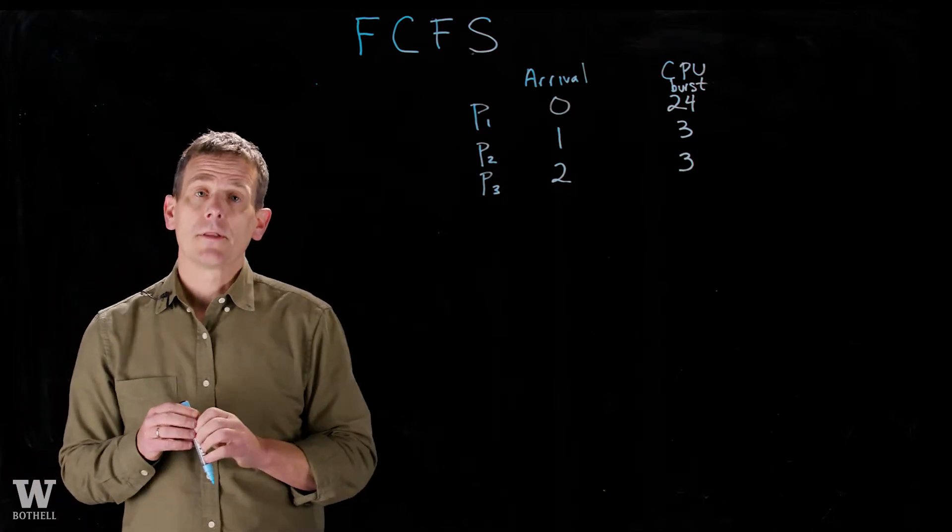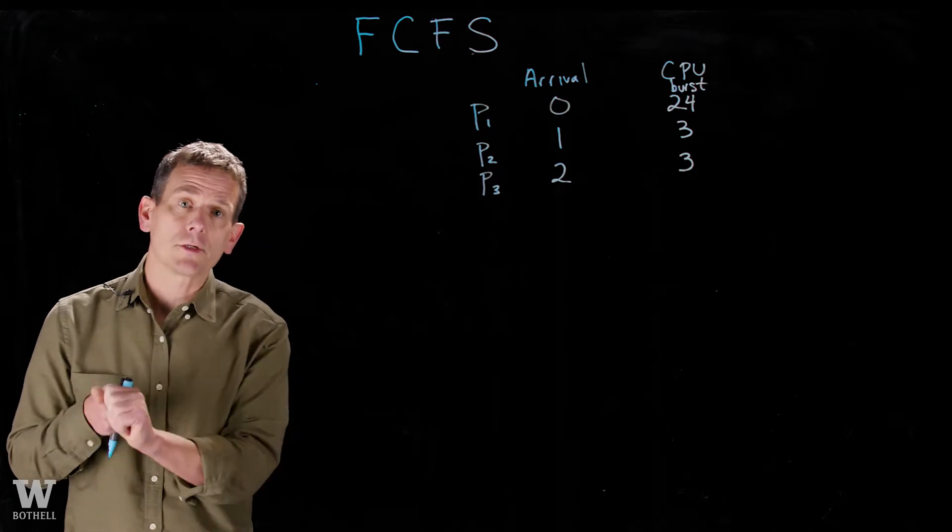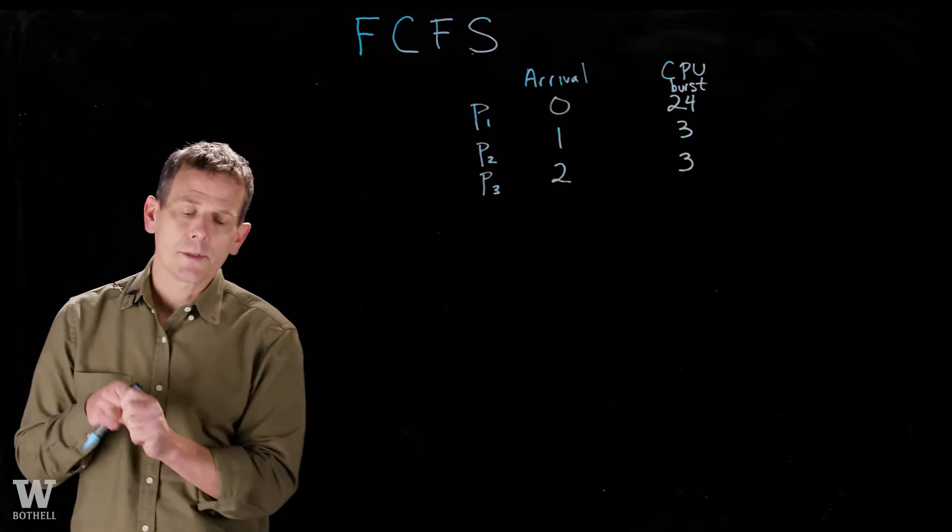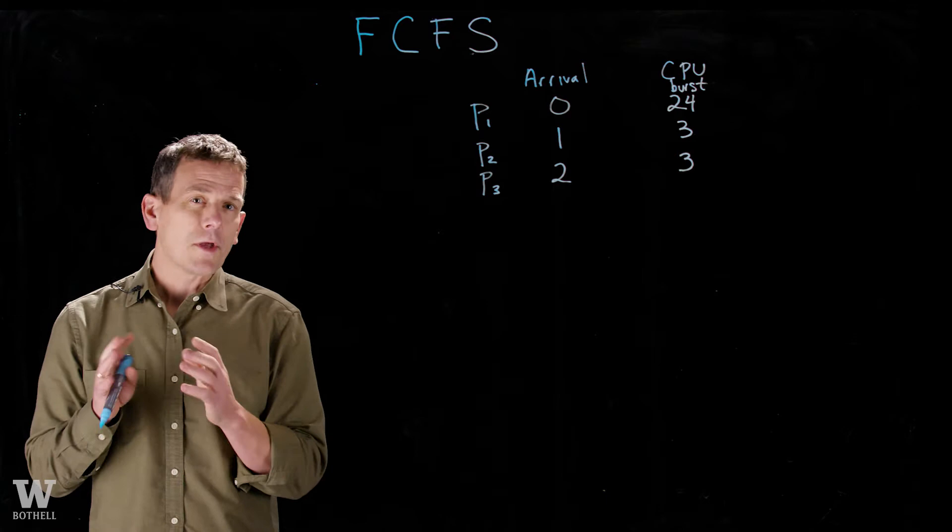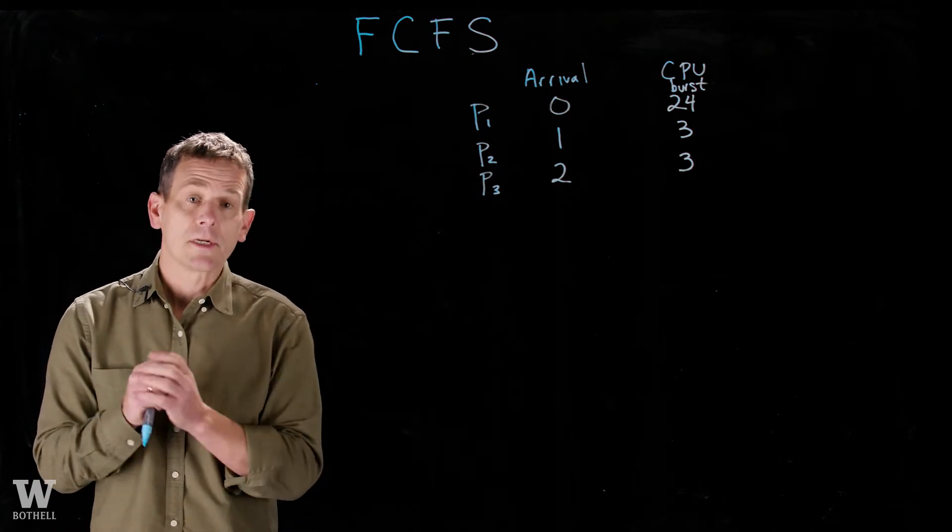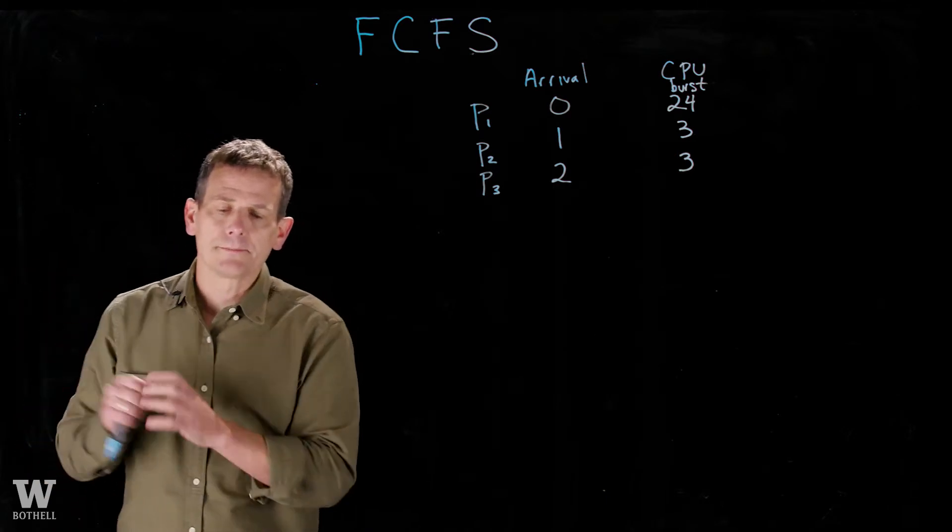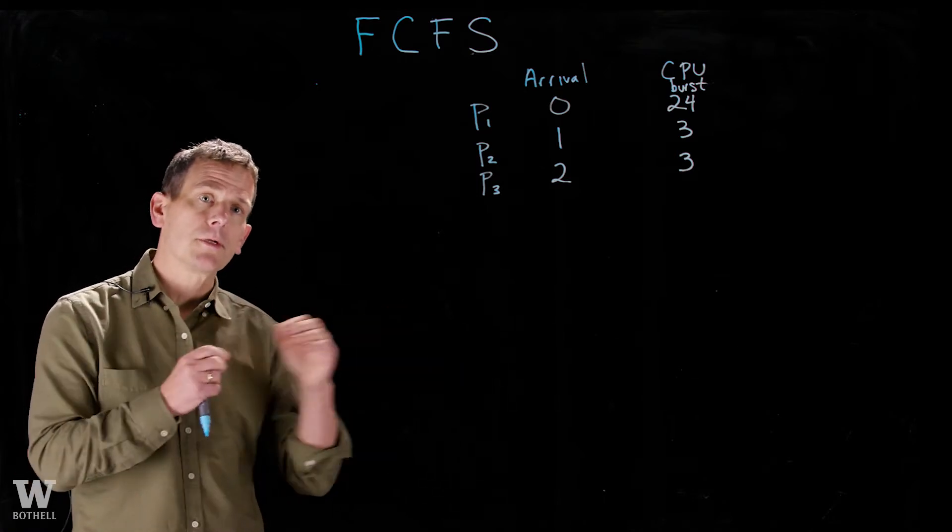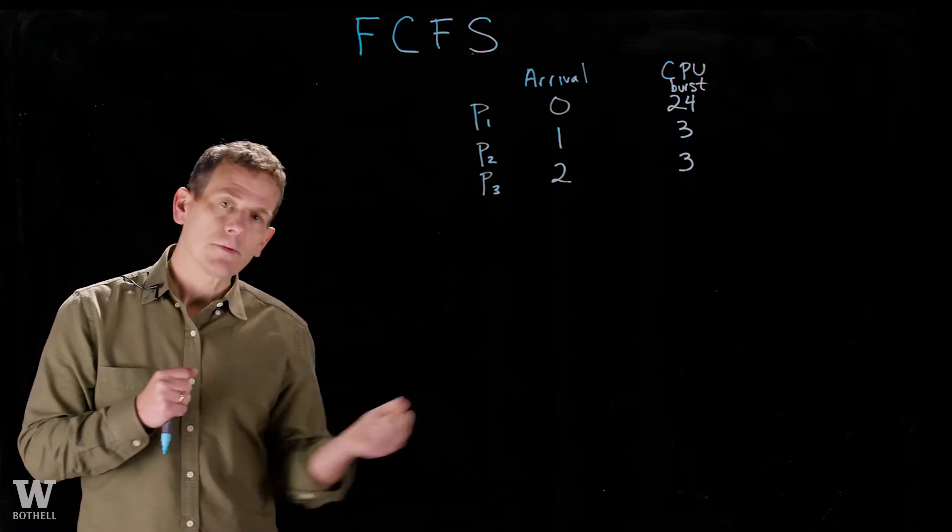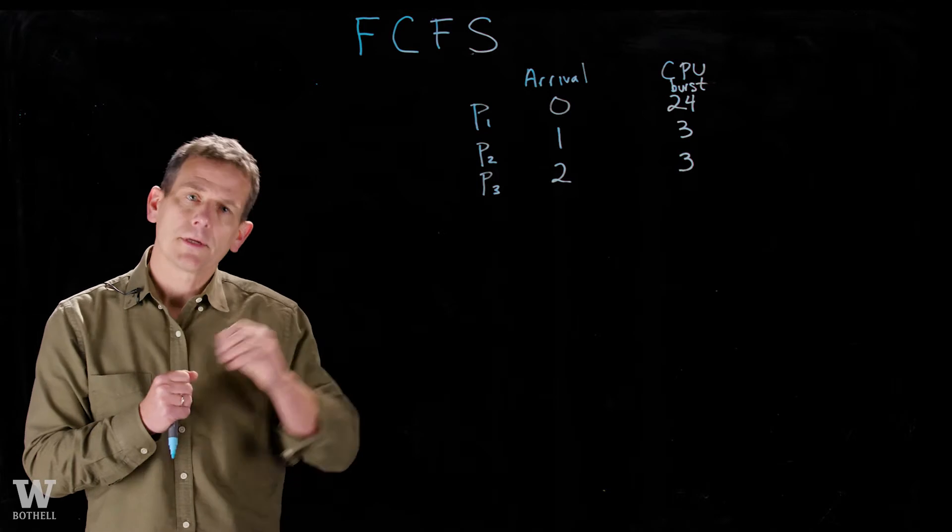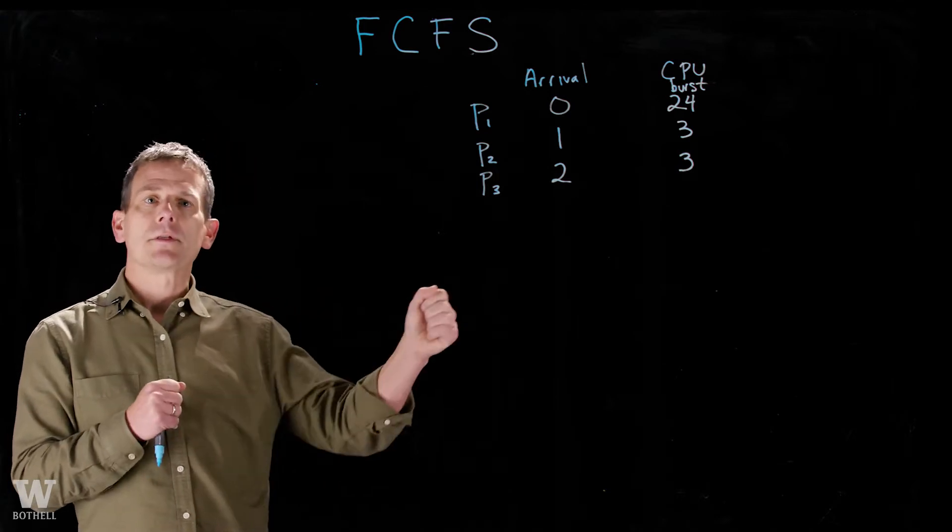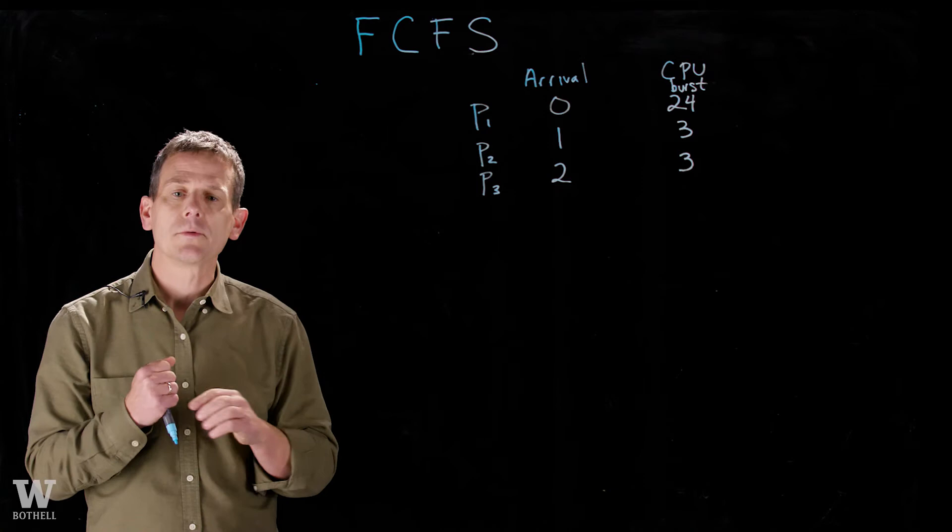During the context switch, the operating system has to store away the registers, the instruction pointer, and all the other aspects of a thread or process to get it started up again. It then decides which thread to run next, pulls in its registers, its instruction pointer, its stack pointer, and kicks it off and it starts running. The system just does this continuously.